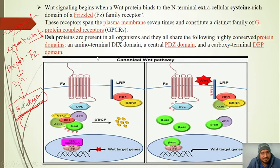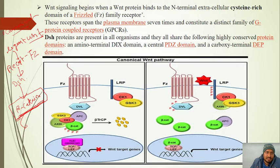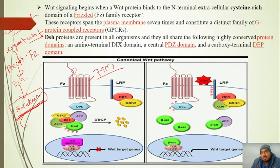When WNT protein binds to the N-terminal extracellular cysteine-rich domain of the Frizzled family receptor, the signal is transduced. The Frizzled family receptor is a seven-transmembrane receptor.